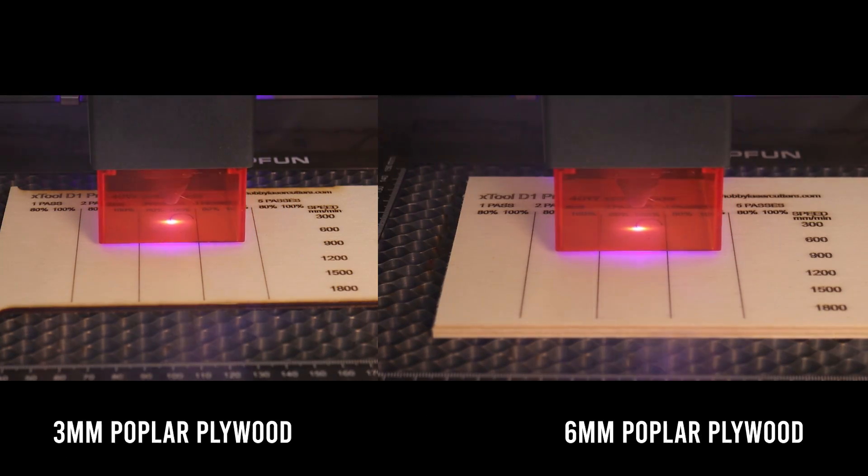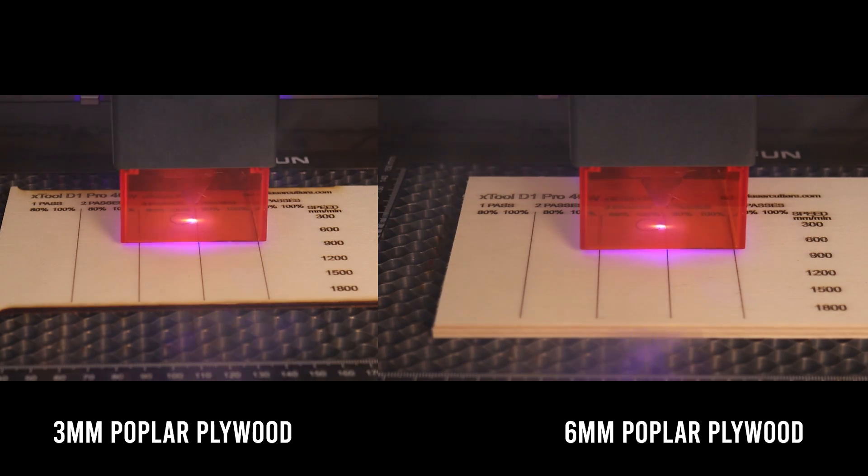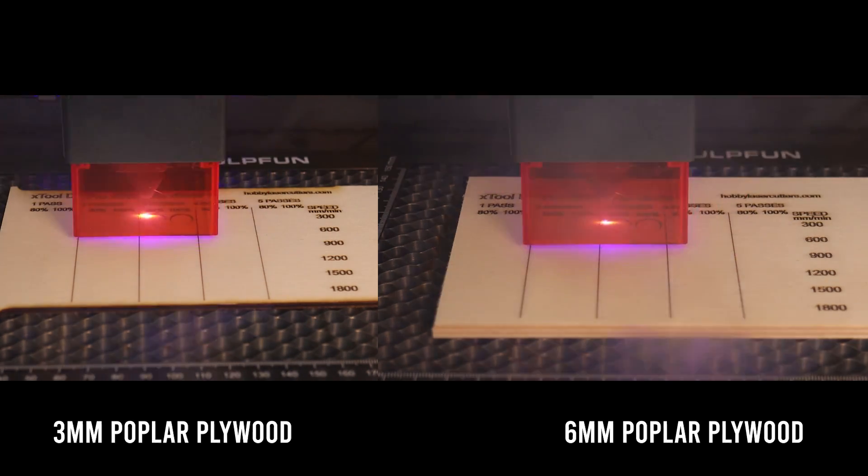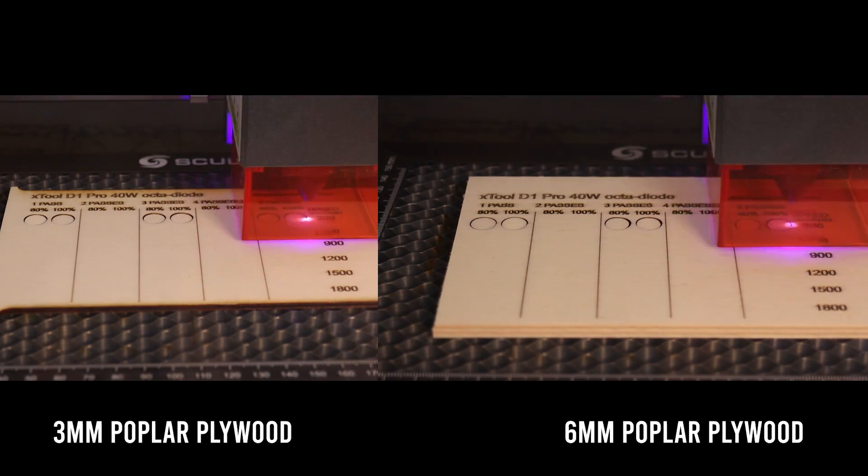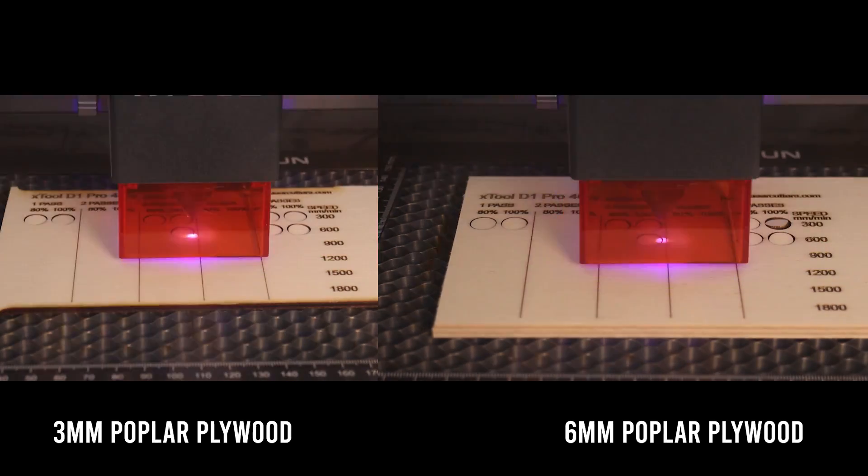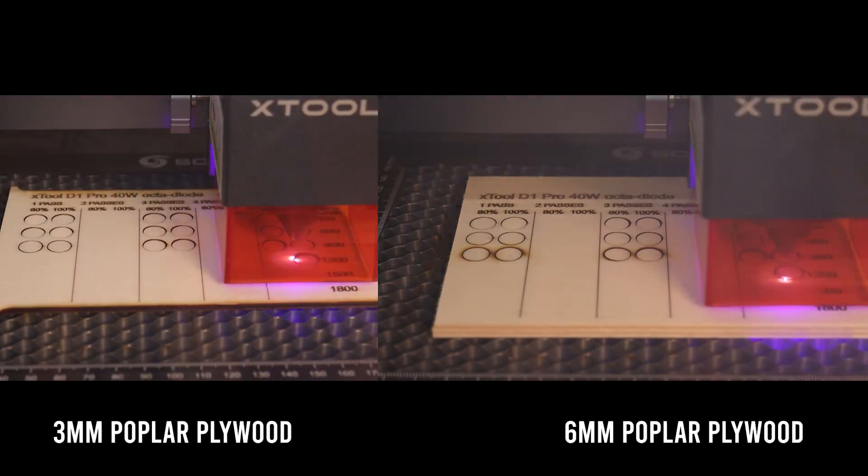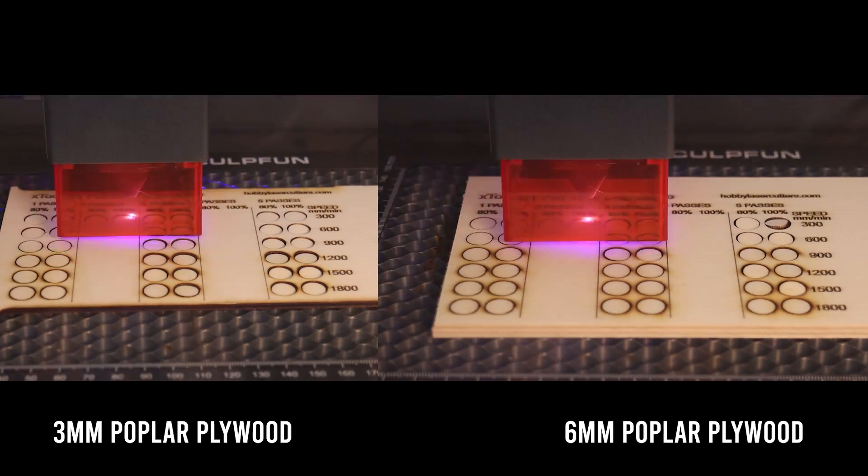Next, I did some cutting tests on 3mm and 6mm poplar plywood. Instead of doing the tests at different speeds separately, I have designed a new test pattern similar to the one I used for the CO2 GUI Cloud. This pattern will show us how many passes are needed to cut through at different speeds.